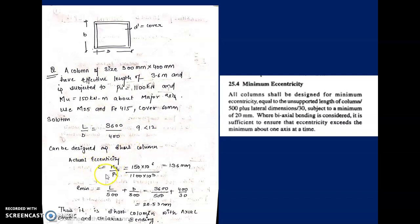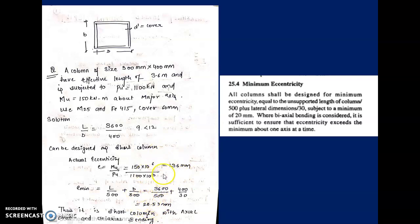Since the actual eccentricity (136 mm) is much larger than the minimum eccentricity (20.53 mm), we design for this moment. If the actual eccentricity had been smaller than the minimum, we would have used the minimum eccentricity moment P×emin. But here 136 mm is a large eccentricity, so we design for the given moment — this is a short column with axial load and uniaxial bending.